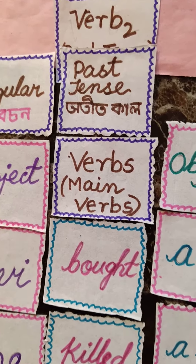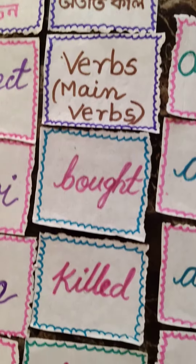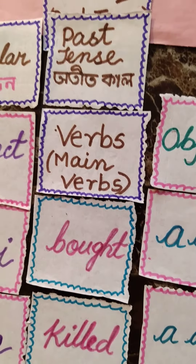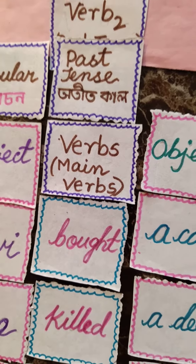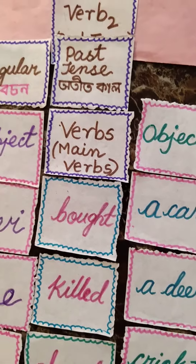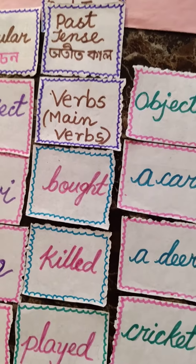In English we use the second form of verbs for the simple past tense. The second form of verbs is what we use.